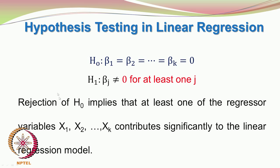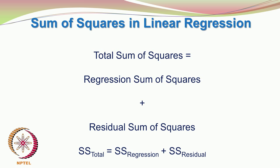We are having k independent variables x1, x2, ..., xk with regression coefficients attached to them. When βj = 0, βj·xj = 0 and there is no effect of that regressor variable xj on the process response. To carry out this hypothesis testing, we take the experimental data, find the total sum of squares, and split it into regression sum of squares and residual sum of squares: SST = SSR + SSE.